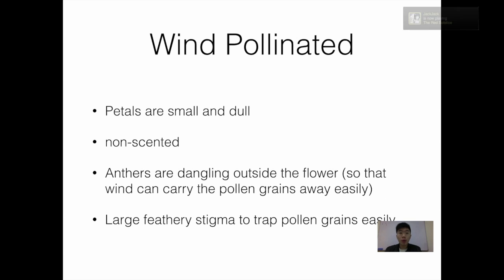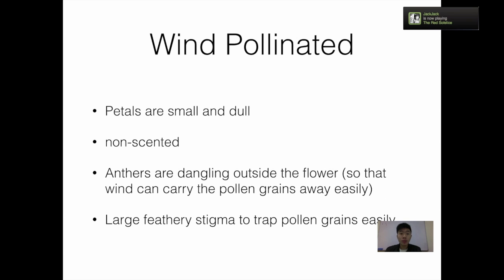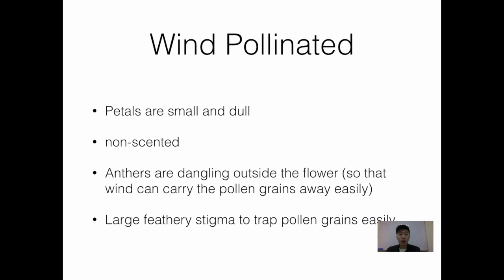Next we'll move on to wind pollinated flowers. The petals are the opposite — they are small and dull. They are non-scented because there's no need to attract insects. The anthers are dangling outside the flower — again in brackets — so that the wind can carry away the pollen grains easily.